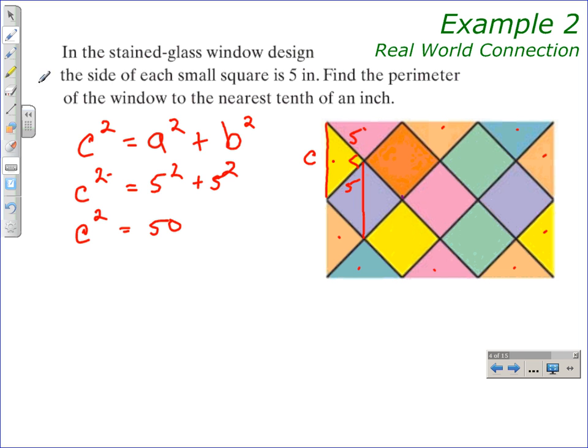We get that result by squaring each five: 25 + 25 = 50. At this point, we take the square root of both sides to solve for c. So c = √50.